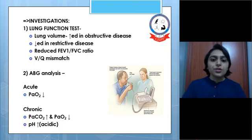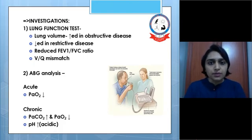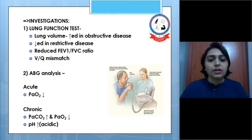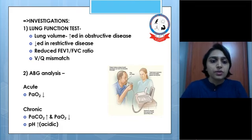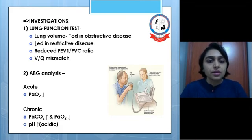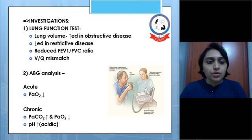Investigations may include lung function tests and other tests. In lung function tests we will see lung volumes increased in obstructive disease and decreased in restrictive disease. There is a reduced FEV1/FVC ratio and ventilation-perfusion (V/Q) mismatch.